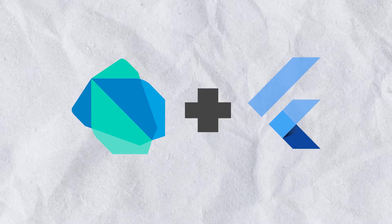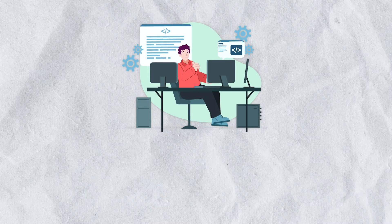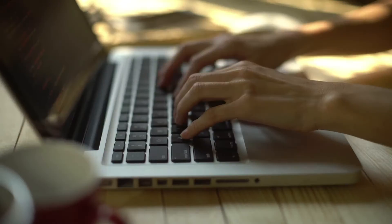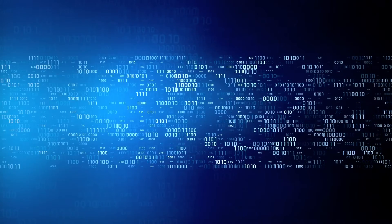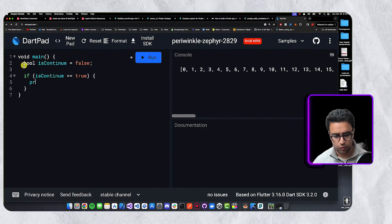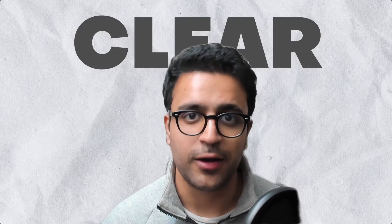Dart is an extremely powerful language and when you couple it with a framework such as Flutter, it can help us create amazing mobile applications, desktop apps, as well as web apps. But one thing I see common across the Dart ecosystem is that a lot of developers use it incorrectly or do not use the language's complete capabilities. So what I want to do in this video is share with you some do's and don'ts when it comes to Dart programming and help you write more clear and concise code.